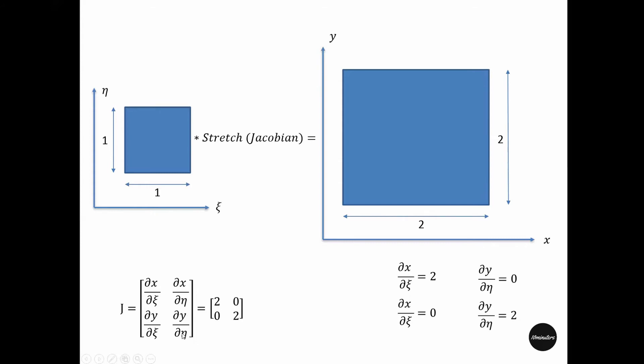Let's focus on this derivative: del x by del zeta. Del zeta is change in zeta, which is one, and del x is the change in x, which is two. So del x by del zeta is two divided by one, which is two. That's why we have this first component to be two. Similarly for y, this is two.